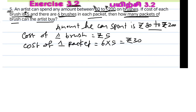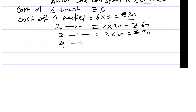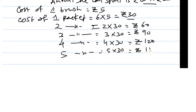One packet of brushes costs 30 rupees. Two packets: 2 into 30 = rupees 60. Three packets: 3 into 30 = rupees 90. Four packets: 4 into 30 = rupees 120. Five packets: 5 into 30 = rupees 150. Six packets: 6 into 30 = rupees 180.